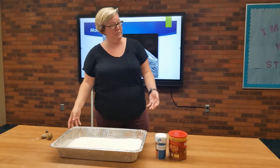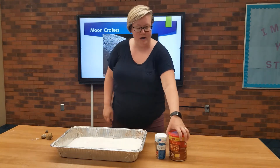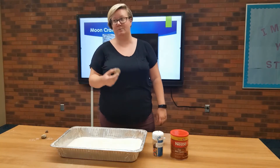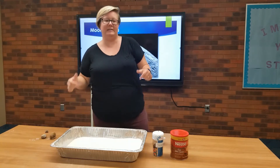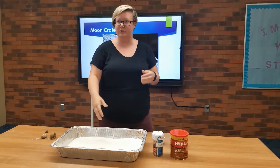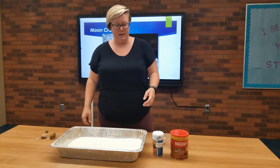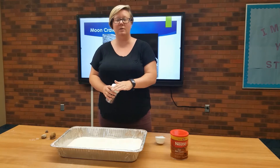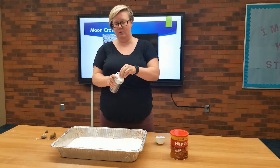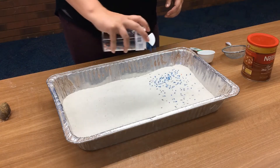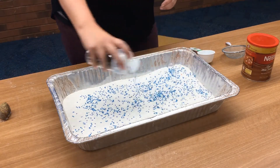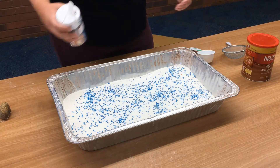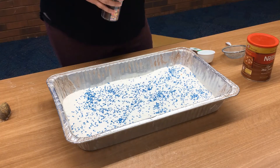We have an experiment today where we have a couple of simple things such as flour, some cocoa powder or hot chocolate mix, some sprinkles, and of course some rocks. These rocks are going to represent asteroids flying around in space that are then going to crash into our little mini moon. Our sprinkles are going to show us different particles that might be further within the lunar soil. All we needed for this was a pan — you can use a pie tin or a big tray. As long as you get about an inch of flour in there, that's the key.